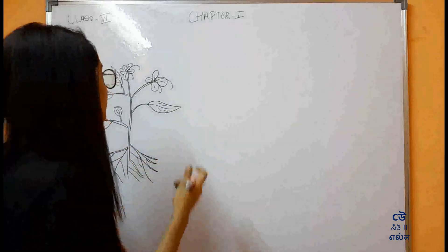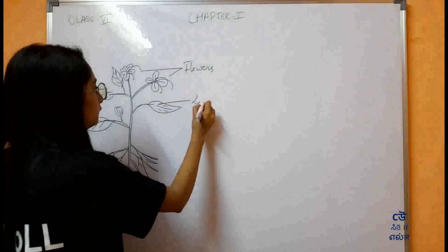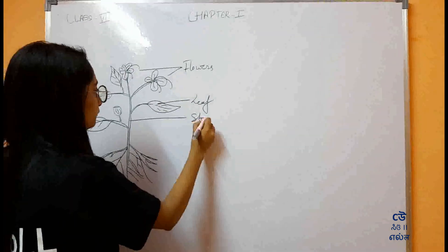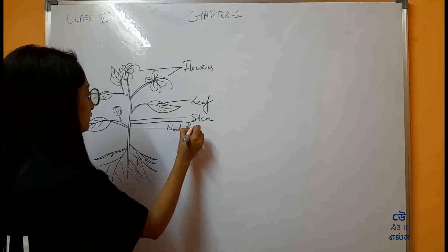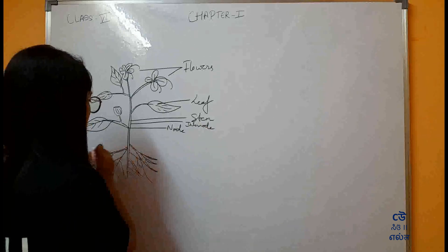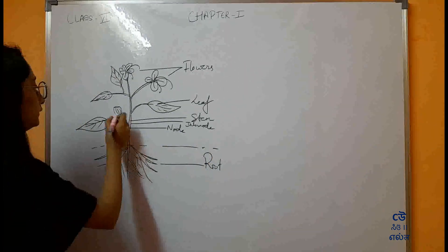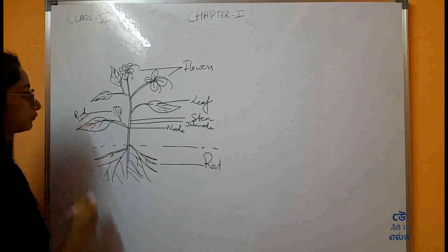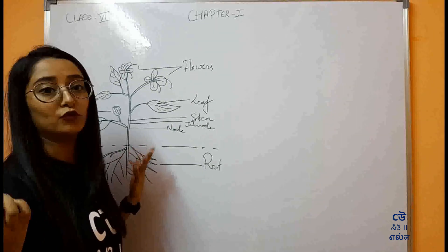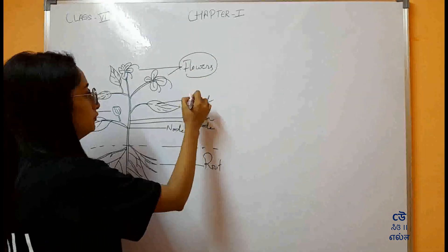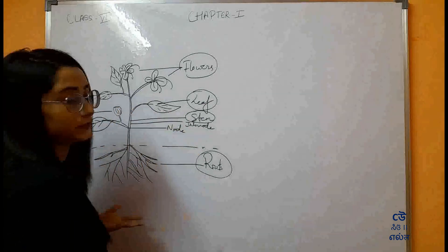Let us take a quick recap. So, there are the flowers. This is the leaf. This is the stem. This is the node of stem. This is the internode. And this is the root. And this is the bud. We have studied that there are some plants whose more than two parts are edible — like flowers, leaves, stem, roots, and sometimes buds as well.